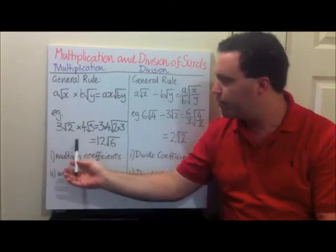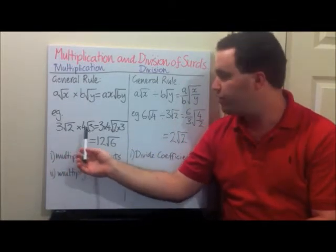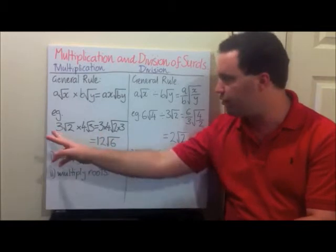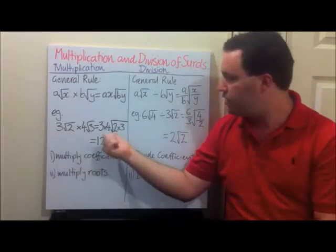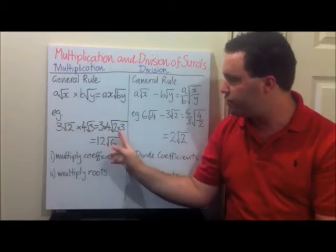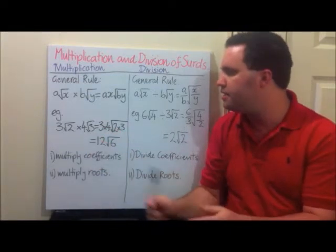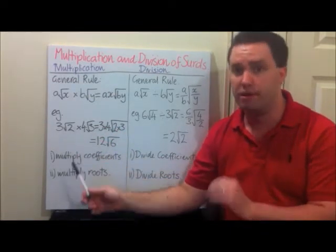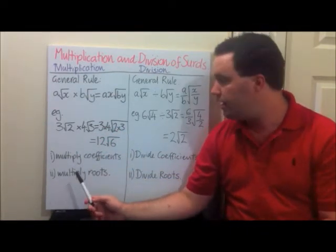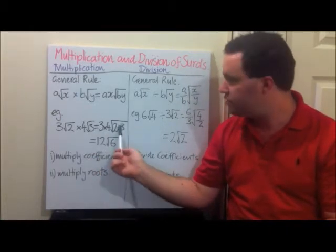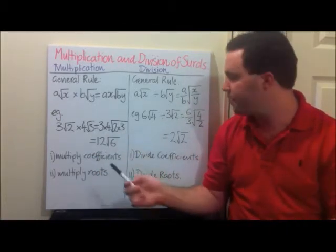We have 3√2 times 4√3, and we're ending up with 3 times 4, so the numbers out the front, times the square root of 2 times 3, which is the numbers inside the square root function. 3 times 4 is 12, 2 times 3 is 6. 12√6, done.